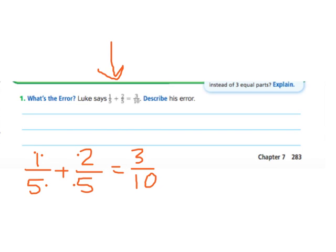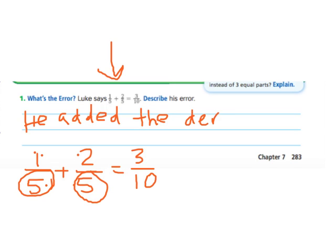But that's not correct because when we're adding fractions, the denominator has to stay the same. So this is not correct because he added the denominator. You're not supposed to do that. The denominator is just supposed to stay the same. So really, instead of three-tenths, this should equal three-fifths.